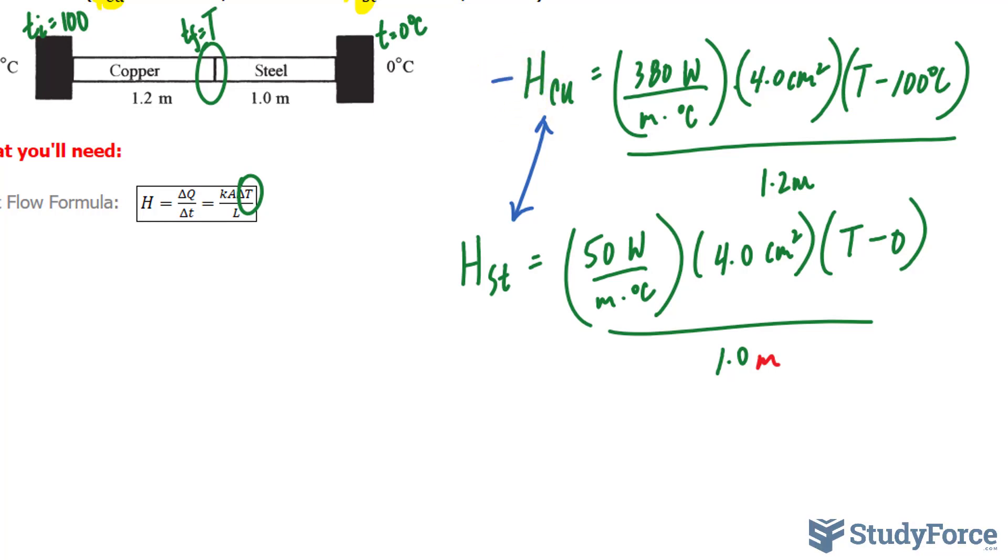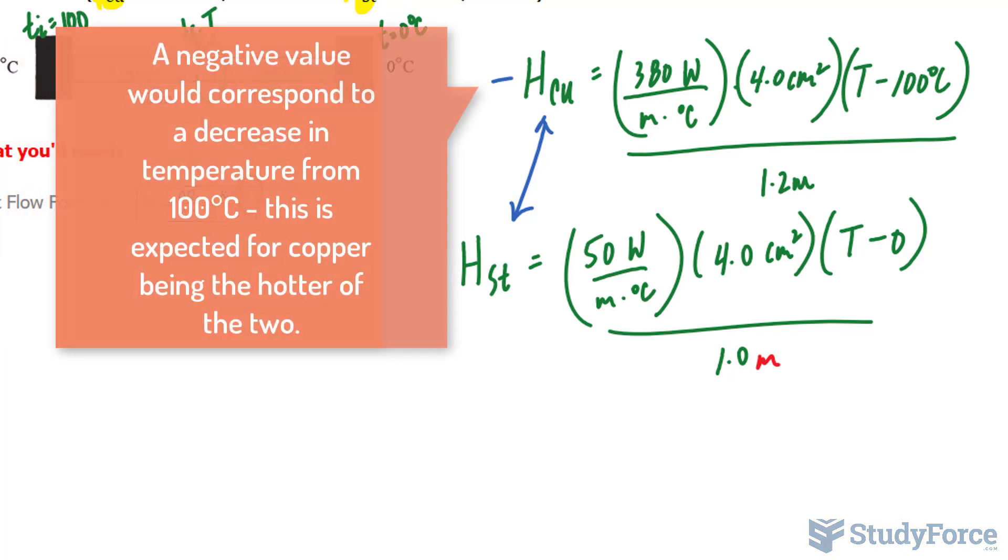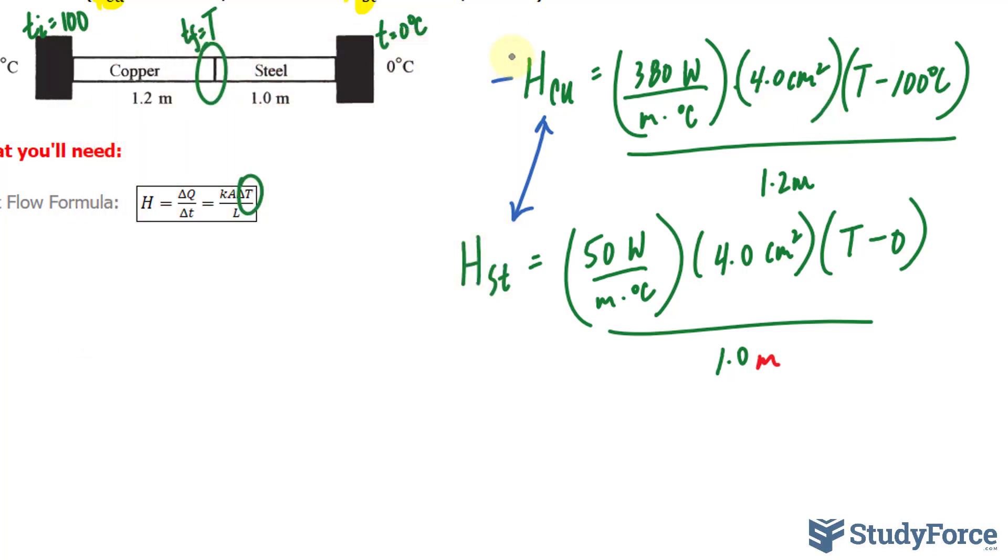Just bear that in mind when solving these types of problems. The substance that's transferring the heat, since we don't know the final temperature here, set it equal to negative. Whereas the one that's receiving that heat, in this case the steel being the colder of the two, leave it as positive.